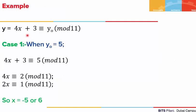We have found y values but need to find x. Going back to our congruence: in the first case y₀ = 5, so 4x + 3 ≡ 5 mod 11, giving 4x ≡ 2 mod 11. We can cancel 2 on both sides since 2 is relatively prime to 11, yielding 2x ≡ 1 mod 11, with solution x = 6.